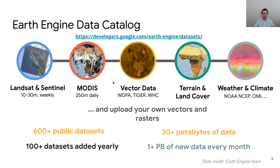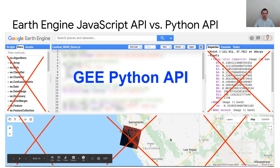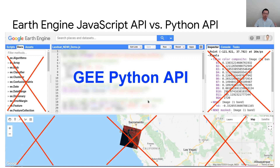Google Earth Engine provides two APIs: a JavaScript API and a Python API. Most users get started with the JavaScript API because it's the default, and most tutorials and official documentation are written using it. From the interface, you can write code in the code editor and display results interactively using the web interface. However, the Python API does not provide this interactive functionality — those are the red crosses I'm highlighting — and that's something I'm trying to implement using the Python API and the geemap package.